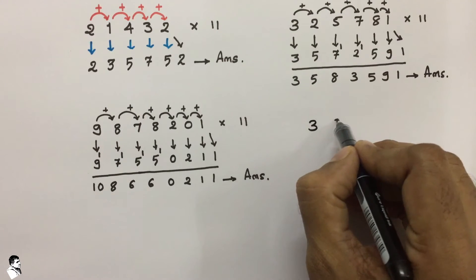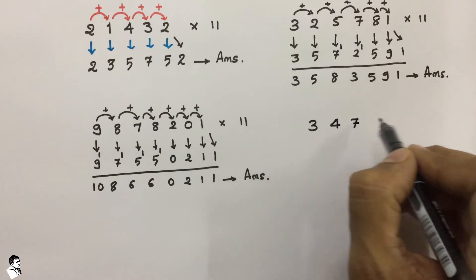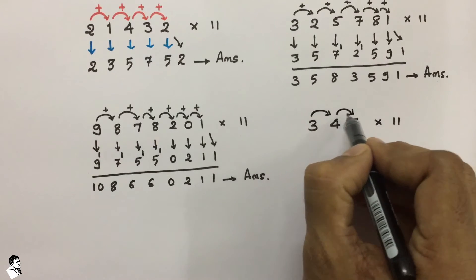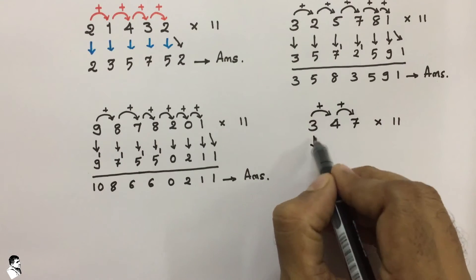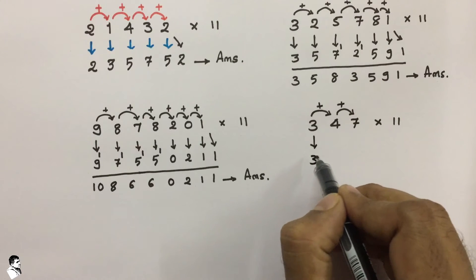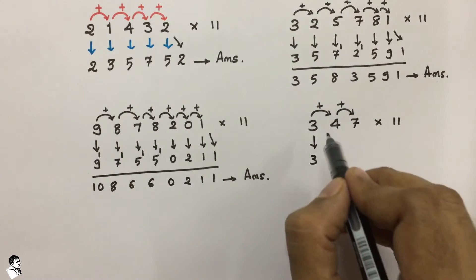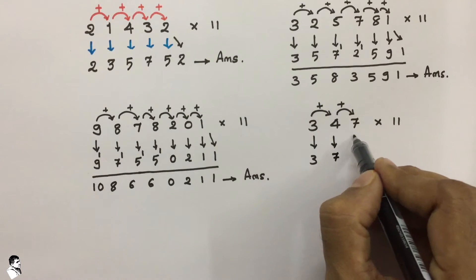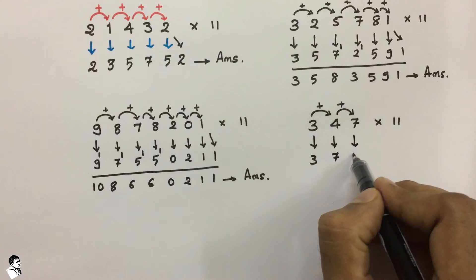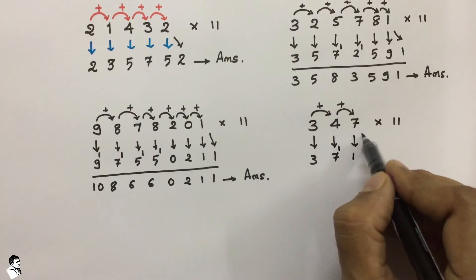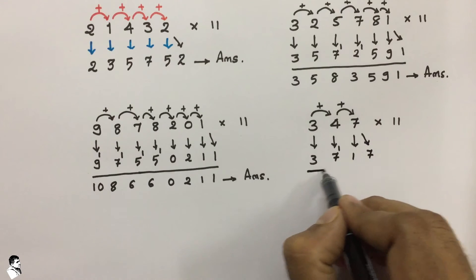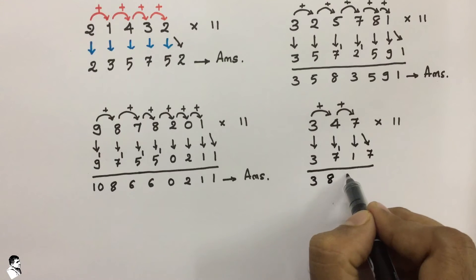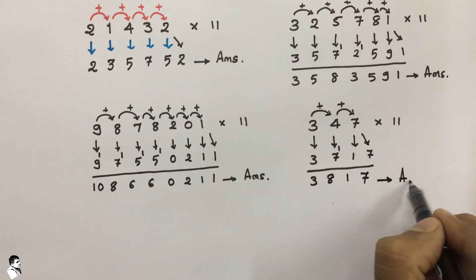Now take a 3-digit number and multiply with 11 — this might be very easy. Write down 3 as it is, then 3 plus 4 is 7, then 4 plus 7 is 11, so 1 carries over. Write down 7 as it is and make a summation: 3, 7 plus 1 is 8, 1, 7. So this is your final answer.